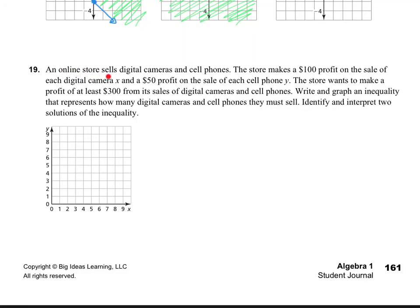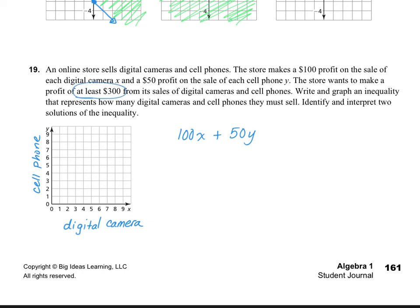Number 19: an online store sells digital cameras and cell phones. The store makes a $100 profit on the sale of each digital camera (x) and a $50 profit on each cell phone (y). The store wants to make a profit of at least $300. So I'll label x as digital cameras and y as cell phones. The inequality is 100x plus 50y is greater than or equal to 300, since at least $300 means $300 or more.